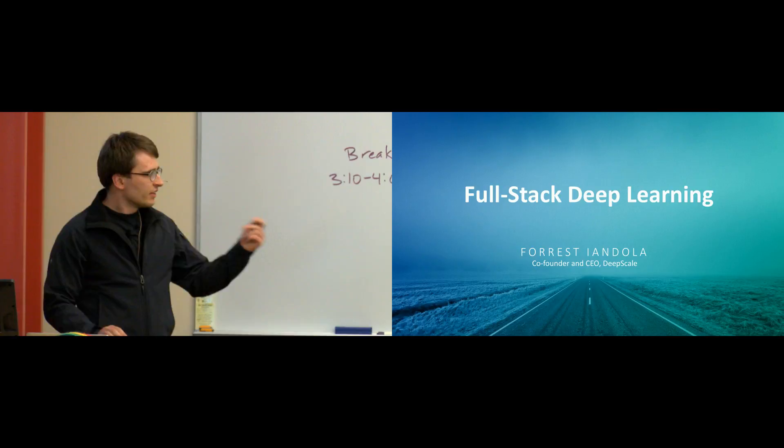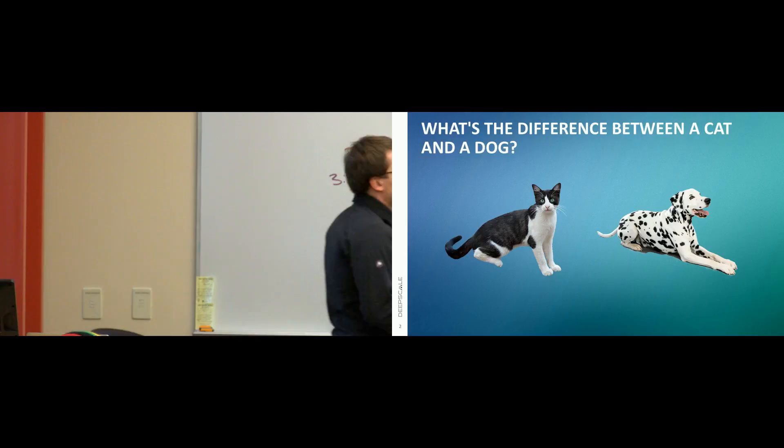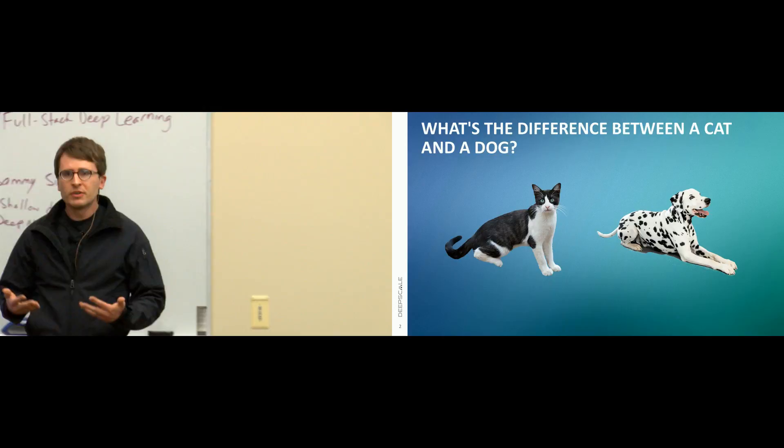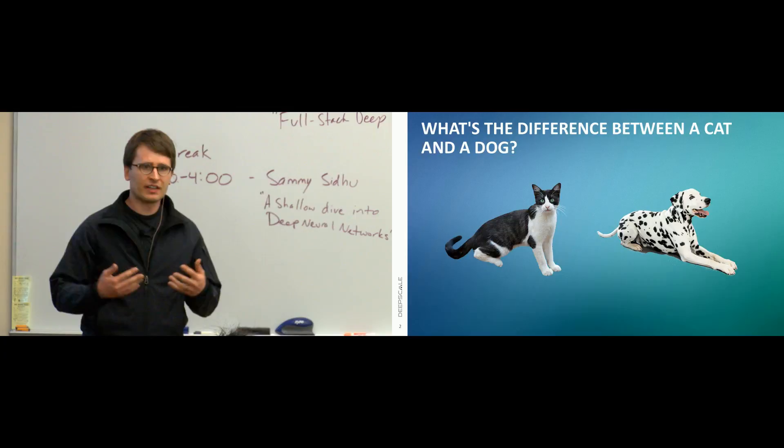So, full-stack deep learning. Let's start simple. What's the difference between a cat and a dog? Is it whether they have whiskers? The color of the fur? How many paws? It's none of those things. As a human, we have a pretty easy time figuring out the difference, but a pretty hard time writing down the rules.